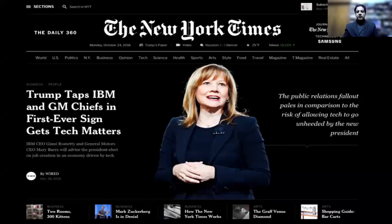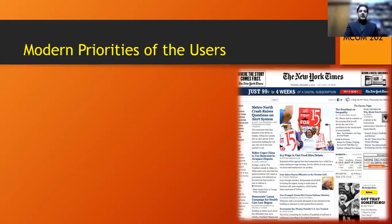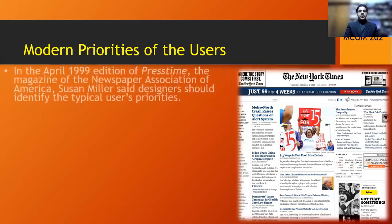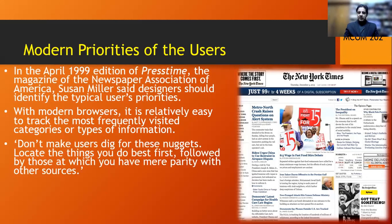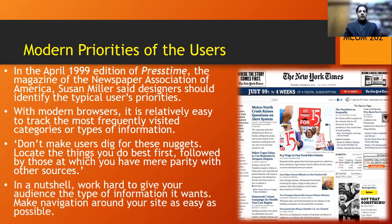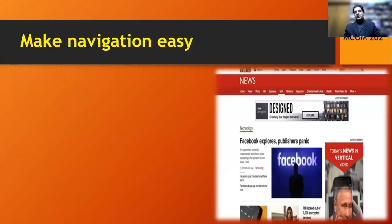The New York Times website succeeds because it knows what it is doing. It makes navigation easy — the publication aims to ensure that people can find the information they want with as few clicks as possible. In a 1999 Press Times edition, the magazine of the Newspaper Association of America, Susan Miller said designers should identify the typical user's priorities. With modern browsers it is relatively easy to track the most frequently visited categories or types of information. Do not make users dig for these nuggets — work hard to give your audience the type of information they actually want.